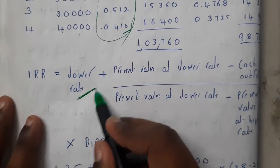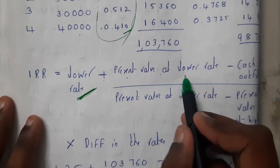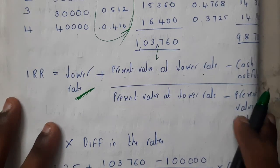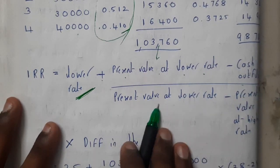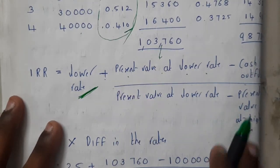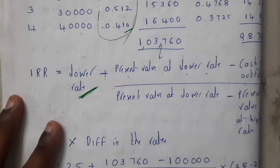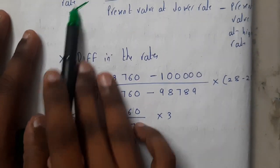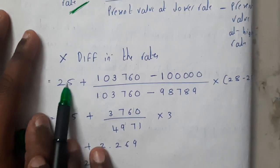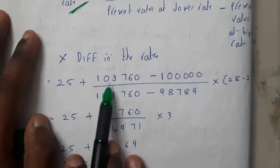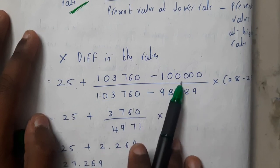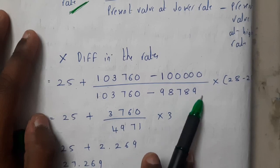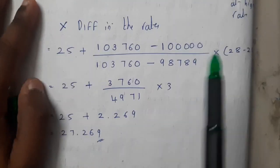The IRR formula is: IRR = Low Rate + [(PV at Low Rate − Cash Outflow) / (PV at Low Rate − PV at High Rate)] × (Difference in Rate). Substituting: 25% + [(1,03,760 − 1,00,000) / (1,03,760 − 98,789)] × (28 − 25).